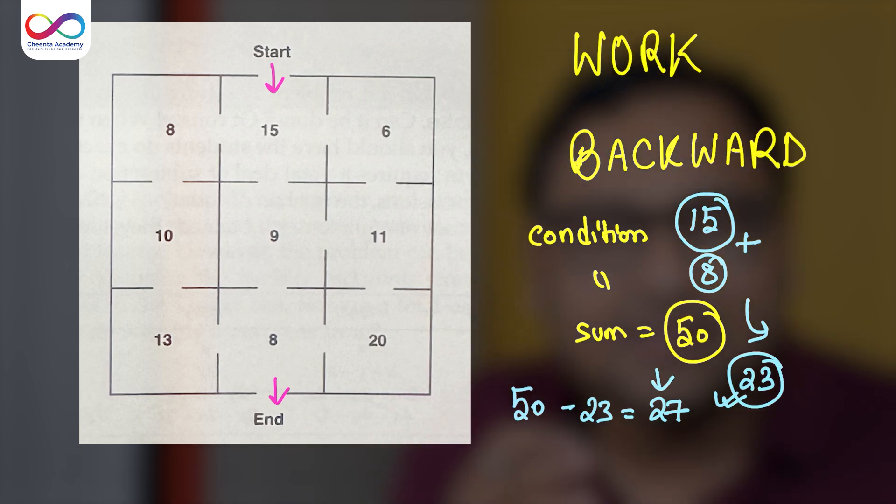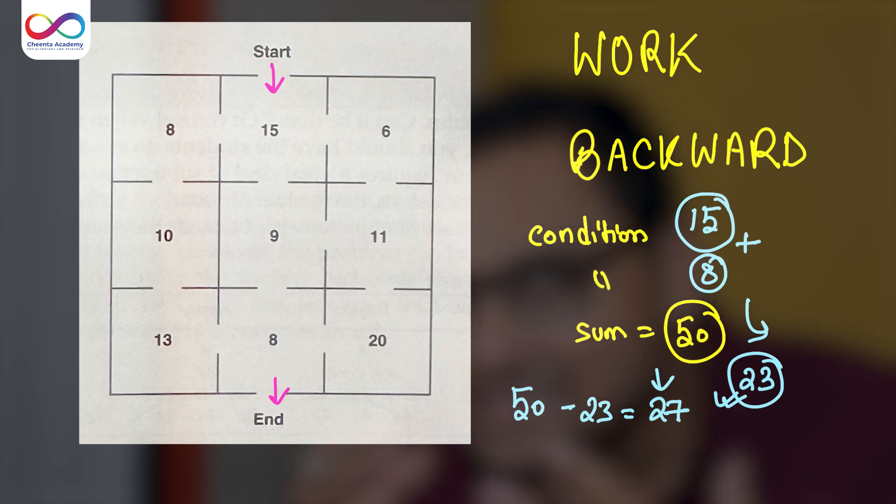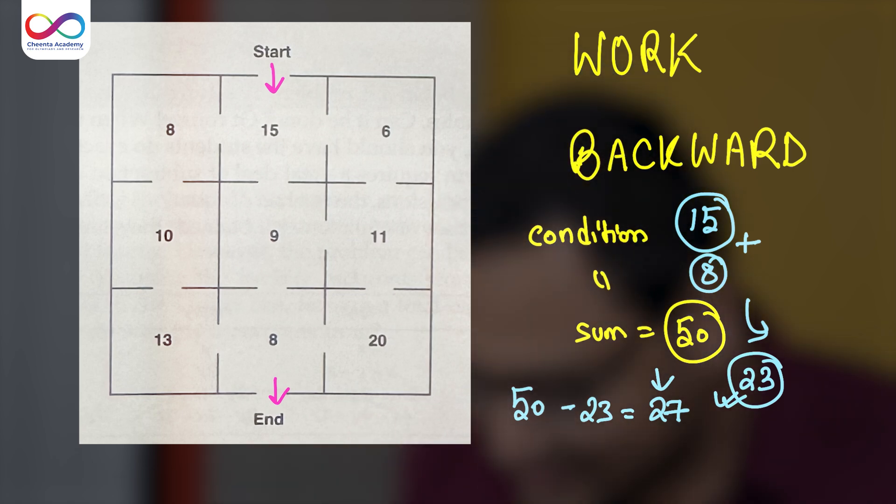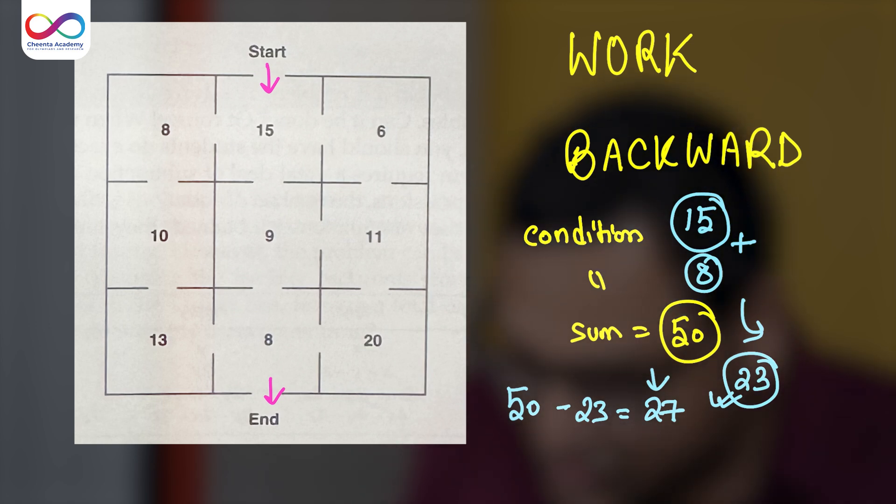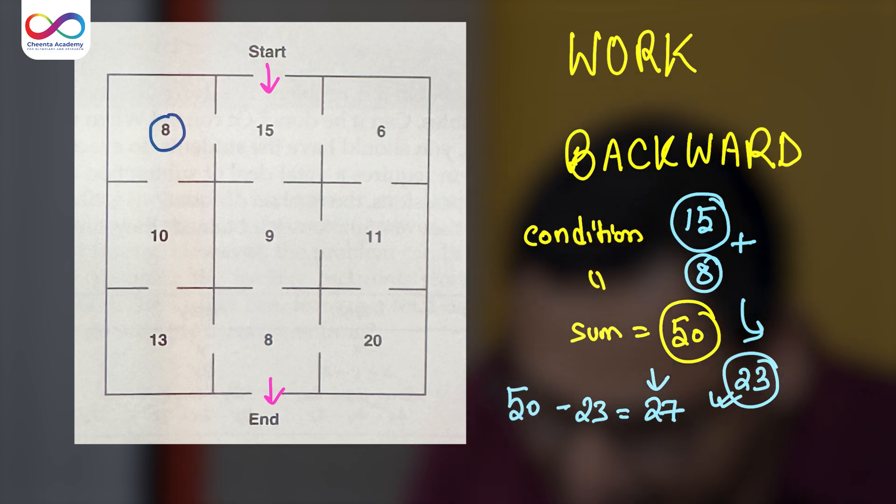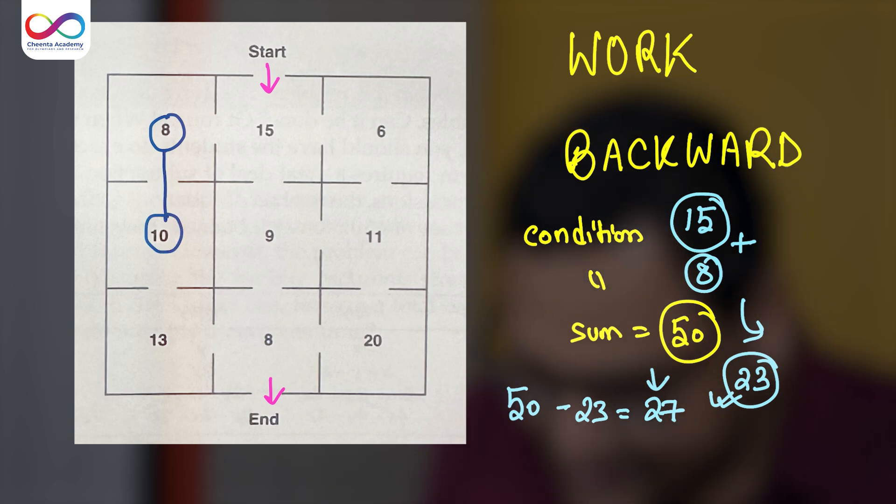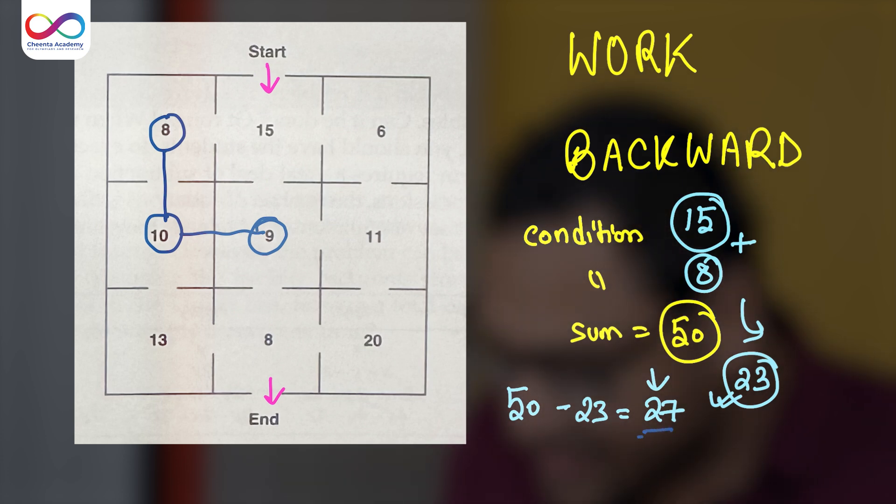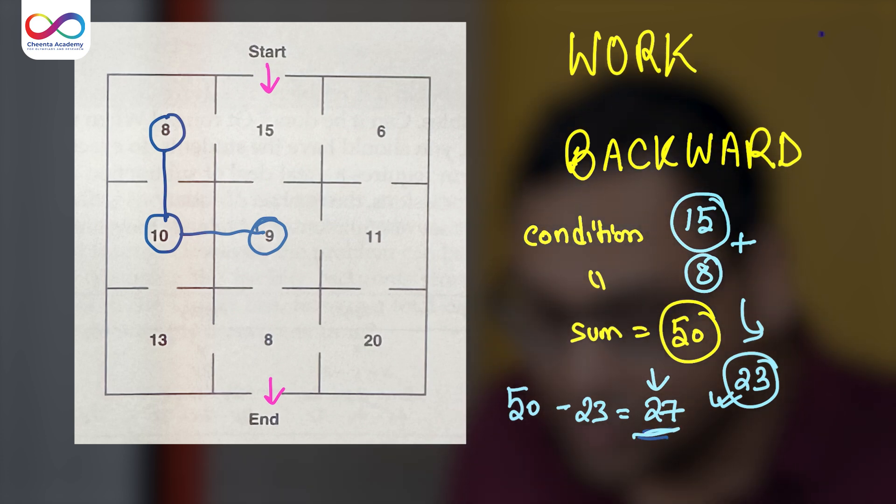Now the remaining part is a bit of trial and error, but you can easily figure it out. For example, in this particular picture, you can see that if you do 8 plus 12 plus 10, that's 18 plus 9, that's 27. So you need 27 and that's how you get 27. That's your path.